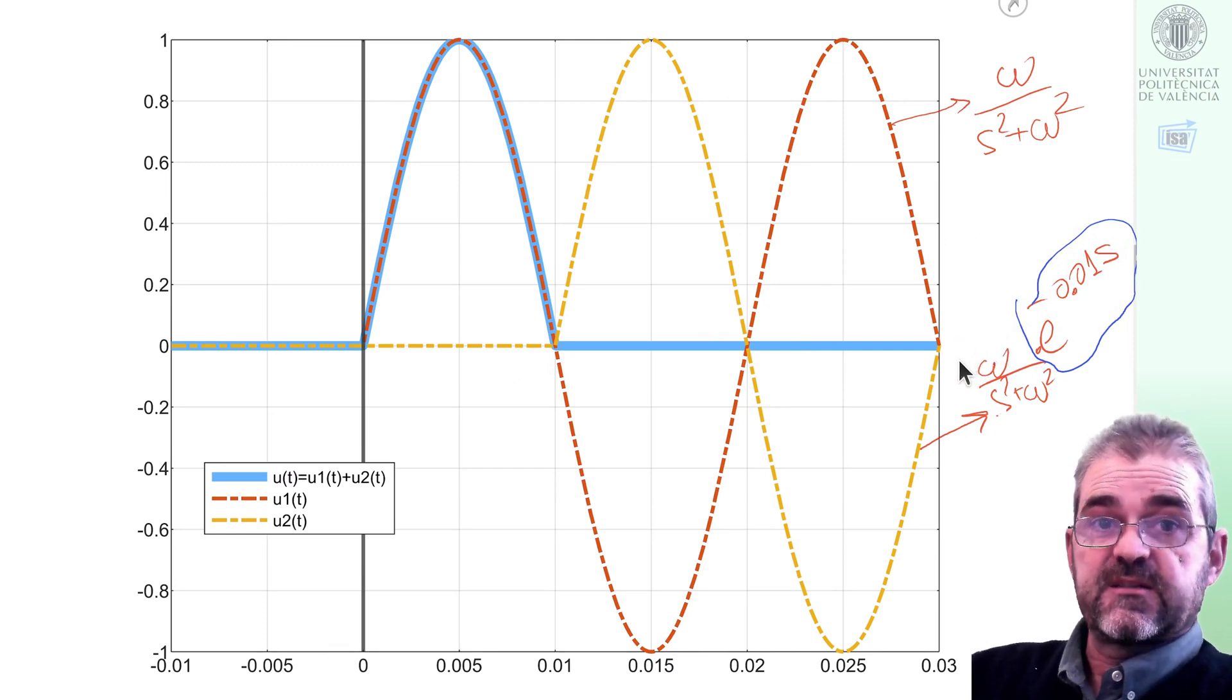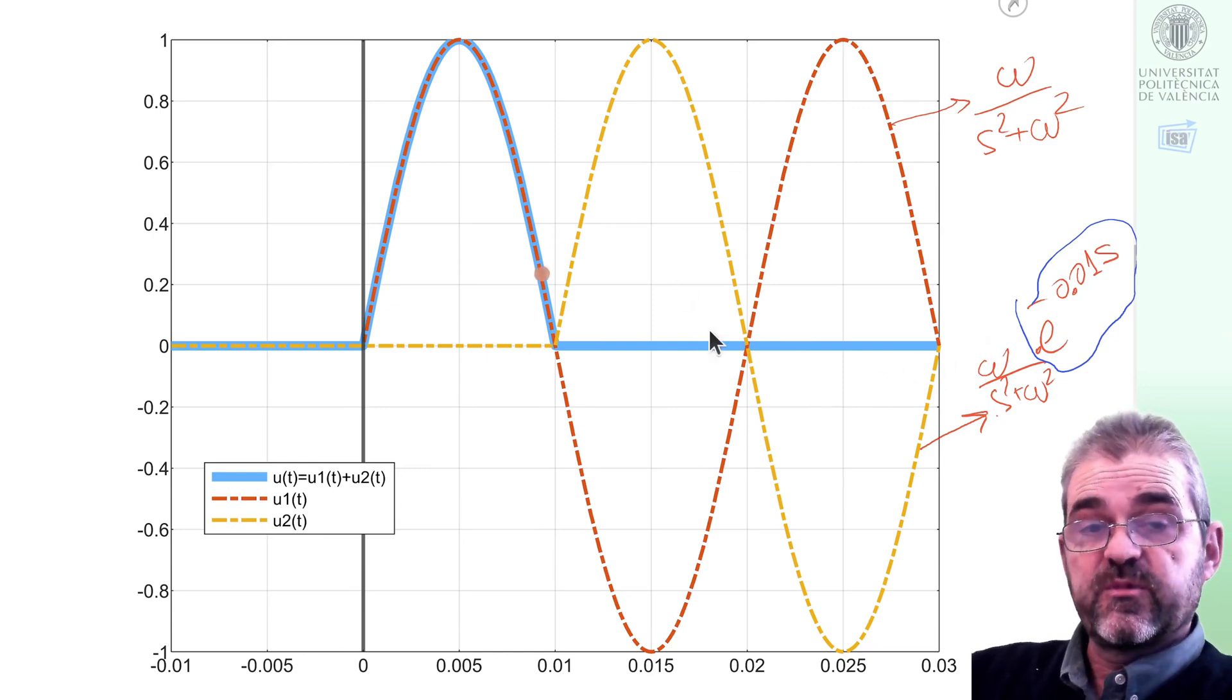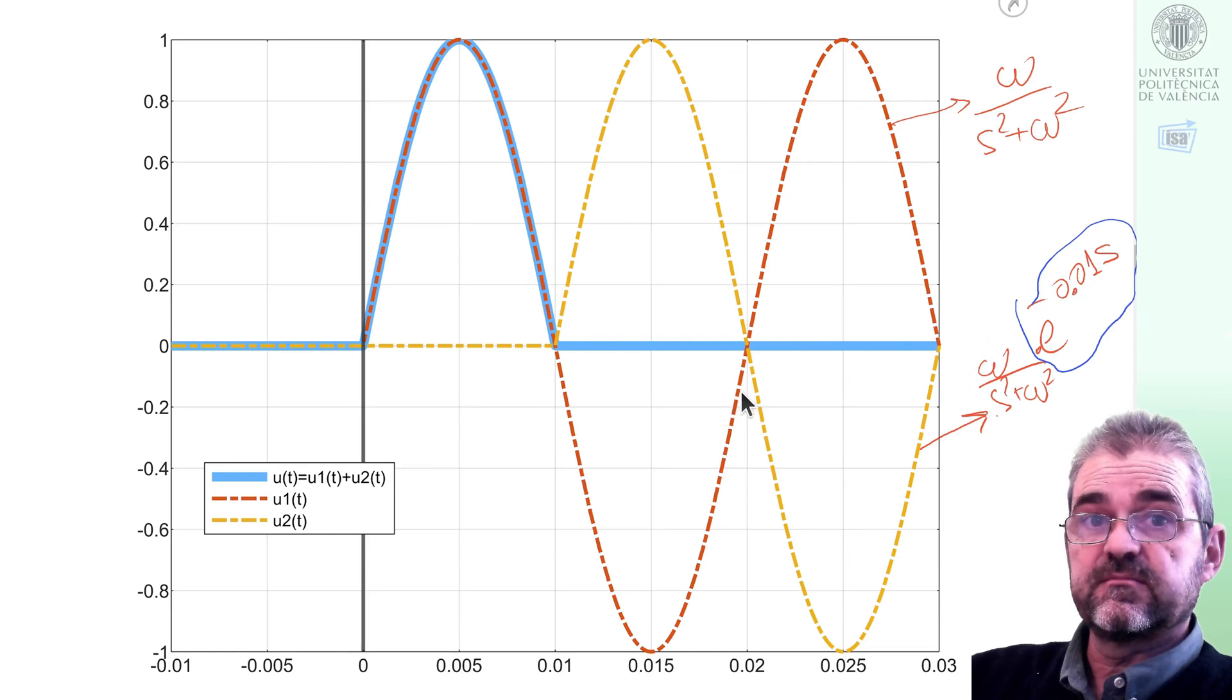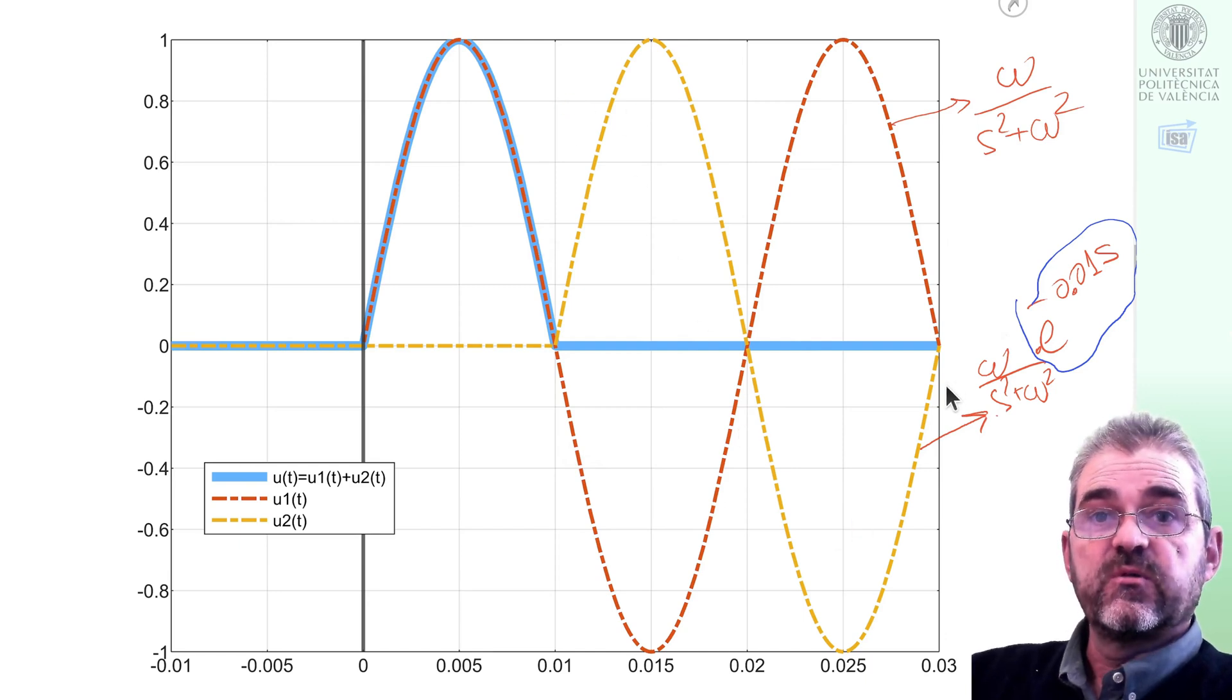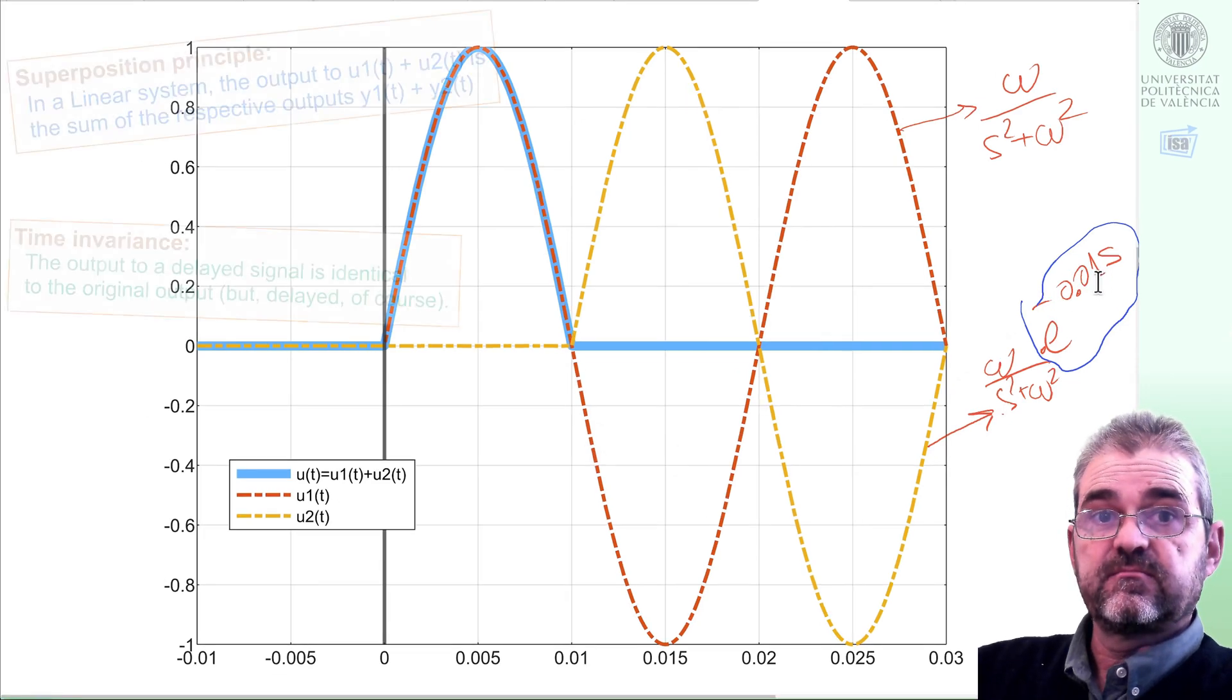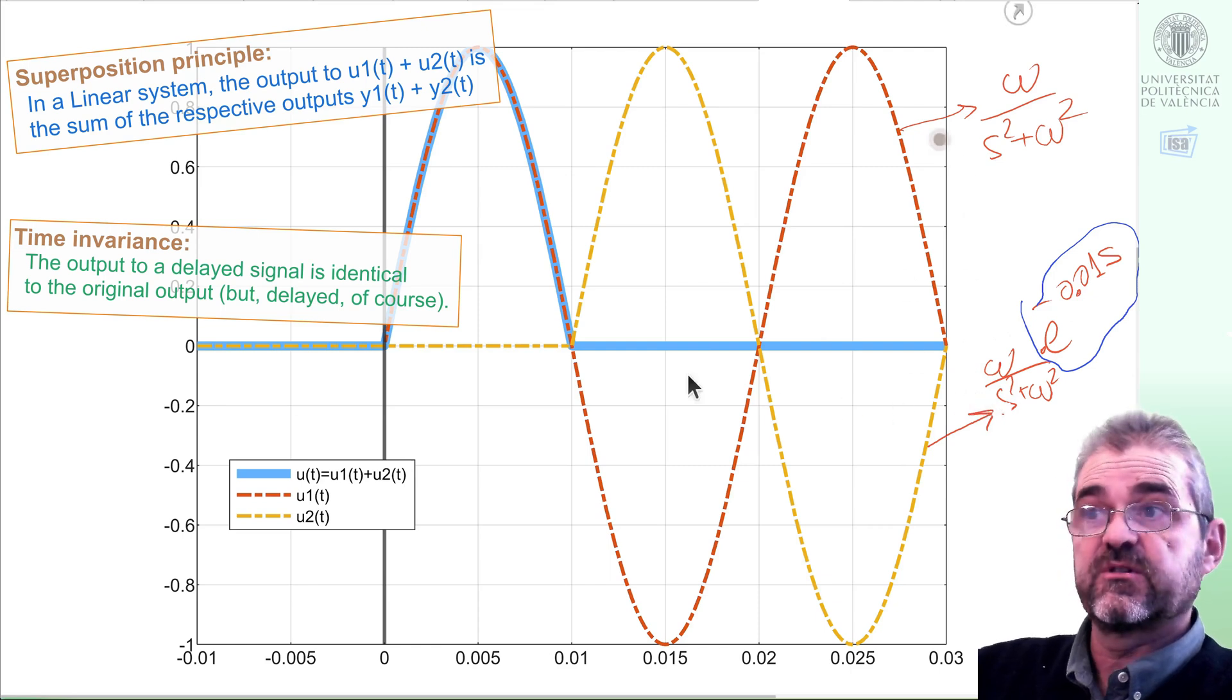But as my circuit is a linear time invariant system, I can do this superposition directly on the output. Why? Well, I know that the output to the yellow input will be exactly the same as the output to the red one but delayed 0.01 seconds, so superposition would tell me that the sum of those two outputs will give me the output to the sine pulse.